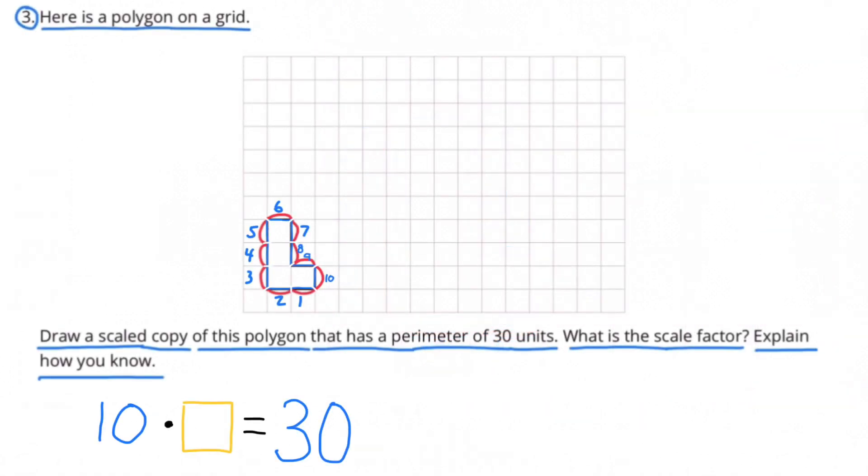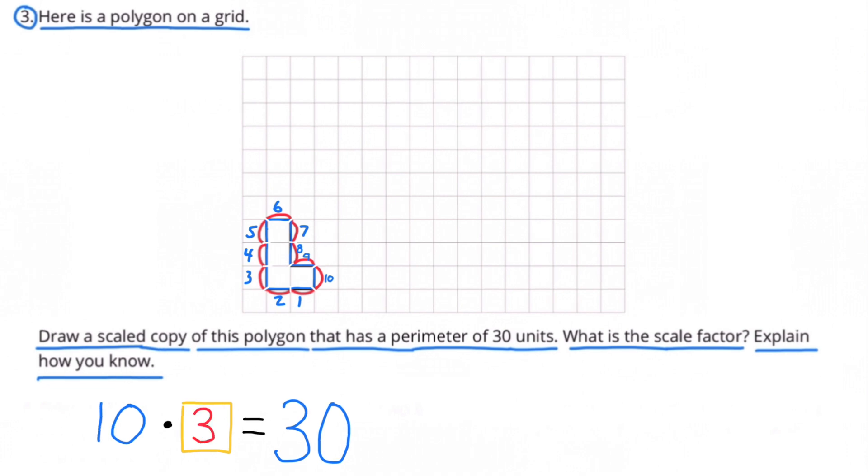So I need to go from a perimeter of 10 units to a perimeter of 30 units. 10 times what number equals 30? 10 times 3 equals 30 units. So we know it's going to have a scale factor of 3.